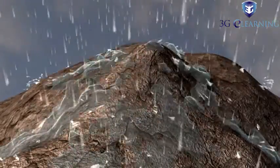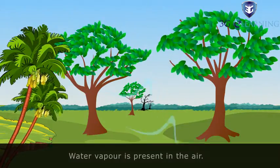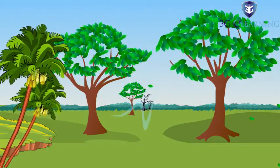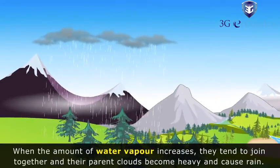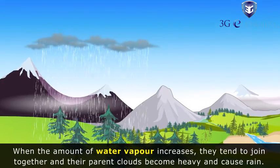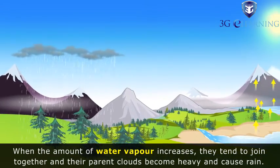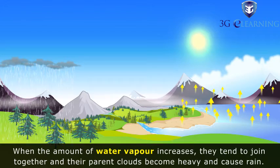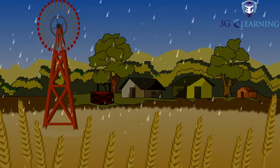Let us see how rains occur. Water vapor is present in the air. When the amount of water vapor increases, it tends to join together and their parent clouds become heavy and cause rain.